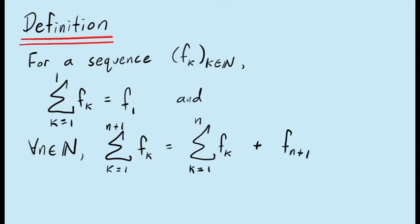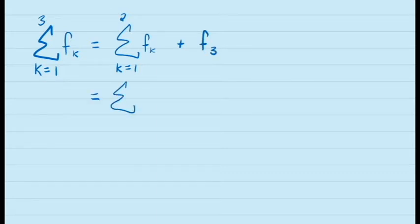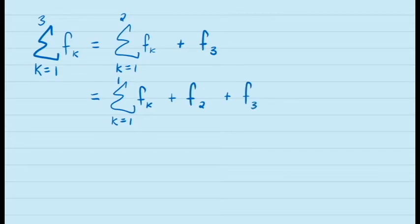Let's look at how this works with the sum from 1 to 3. The sum from 1 to 3 of our sequence fk is defined to be the sum from 1 to 2 plus the third value in the sequence, f3. In turn, the sum from 1 to 2 is defined to be the sum from 1 to 1 plus the second value f2. So we have, as a definition for the sum from 1 to 3, the sum from 1 to 1 plus f2 plus f3. Finally, the sum from 1 to 1 is defined explicitly to be just f1, giving us f1 plus f2 plus f3.